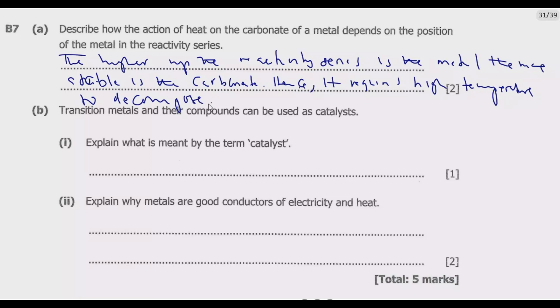Question B: Transition metals and their compounds can be used as catalysts. Explain what is meant by the term catalyst. So in this case we just need to define what a catalyst is.